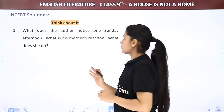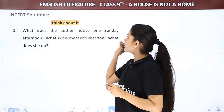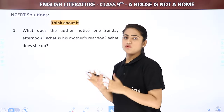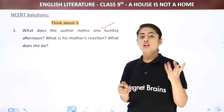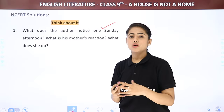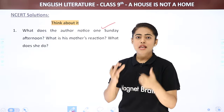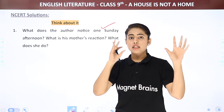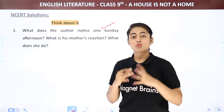So the first question asked in your book is: What does the author notice one Sunday afternoon? This is the incident when there is a fire in the house. What we notice first is that they have a strange smell. Then after this, they see that there is smoke from the ceiling and smoke in the whole room.